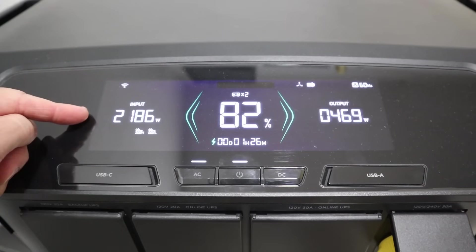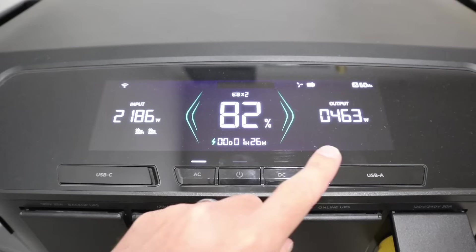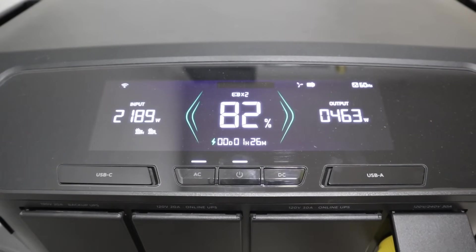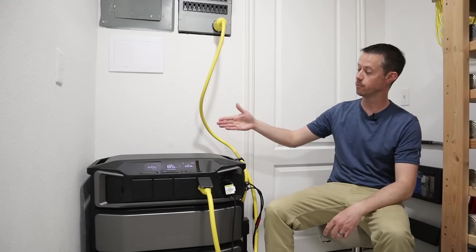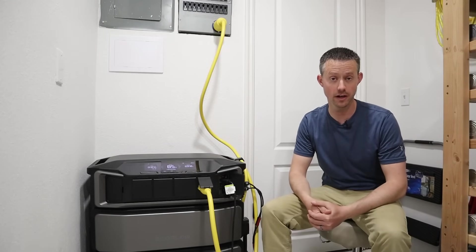We're taking in almost 2,200 watts of solar with almost 500 watts going out. The battery is at 82% state of charge, and we're not even at midday yet. There are many ways to use the DPU, so I thought I'd break down how I'm using it currently in my home.